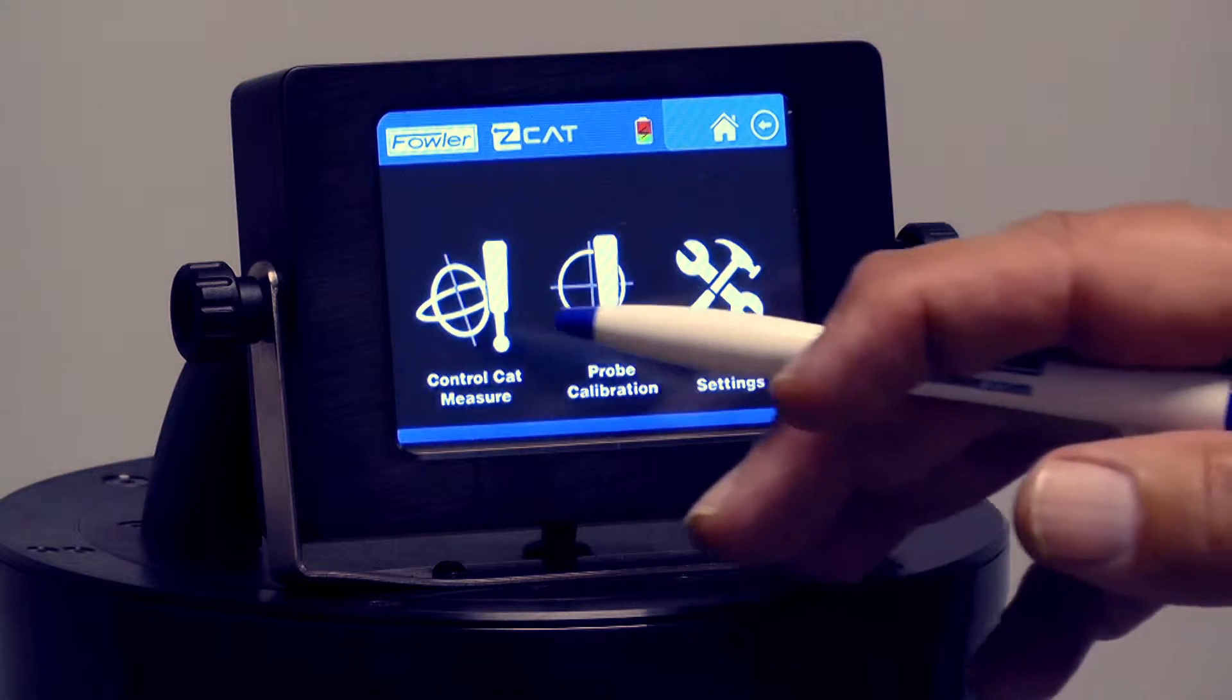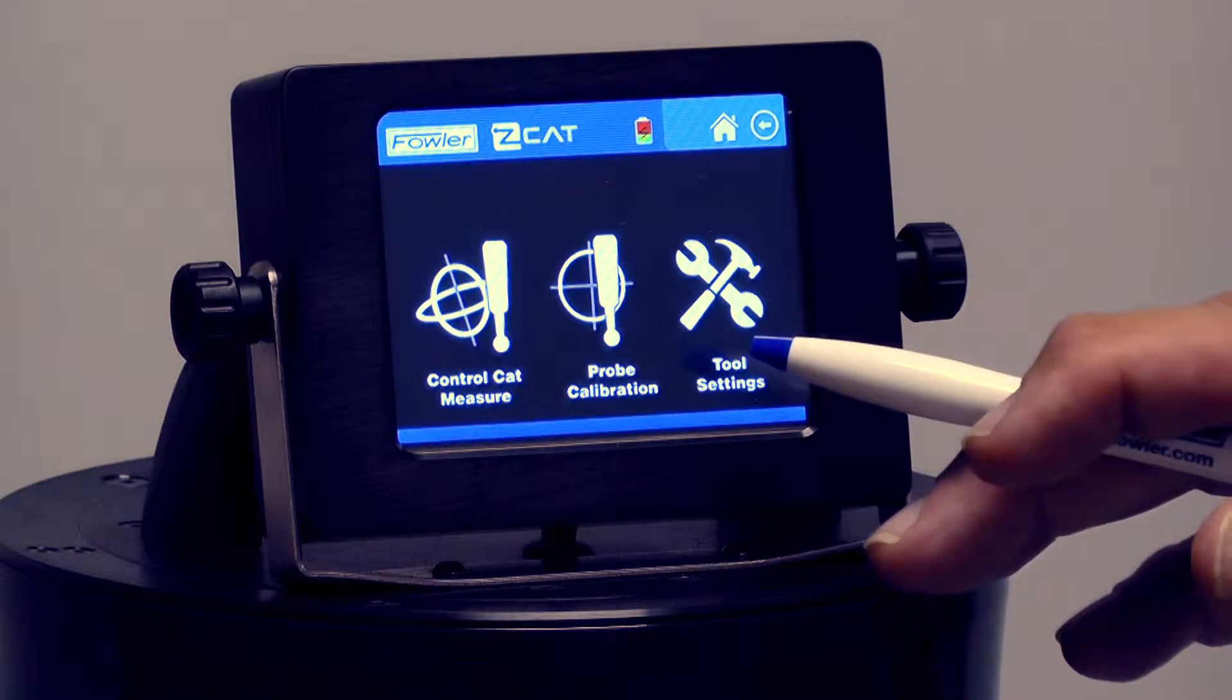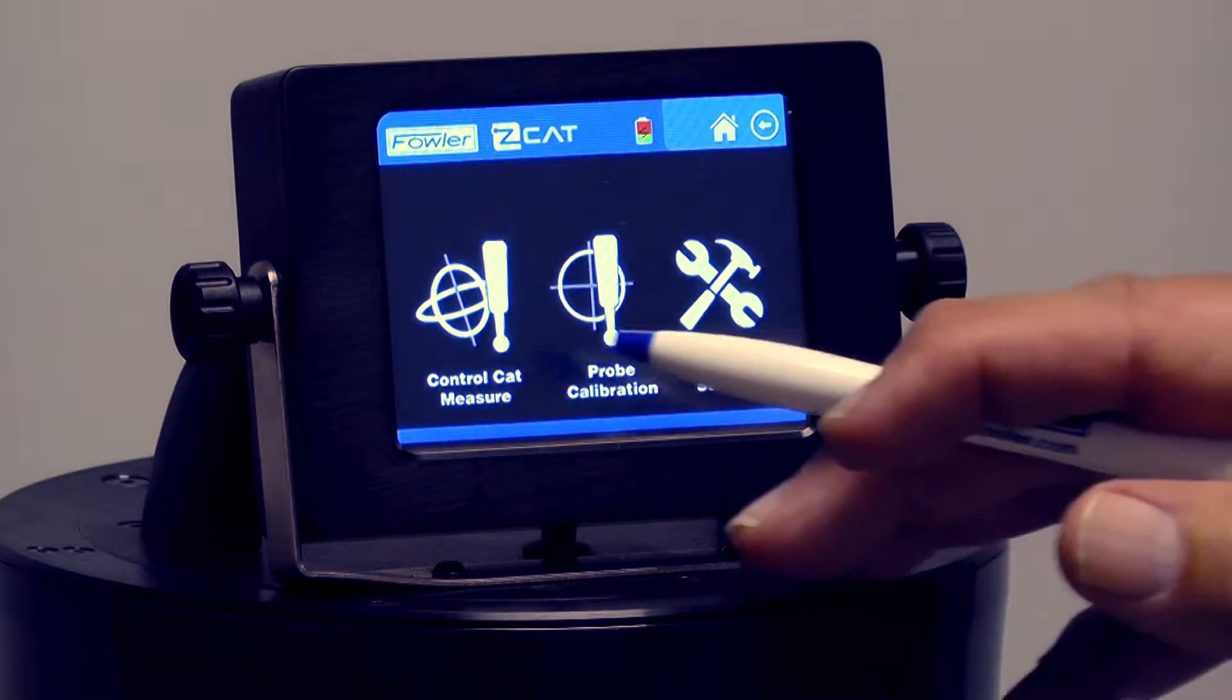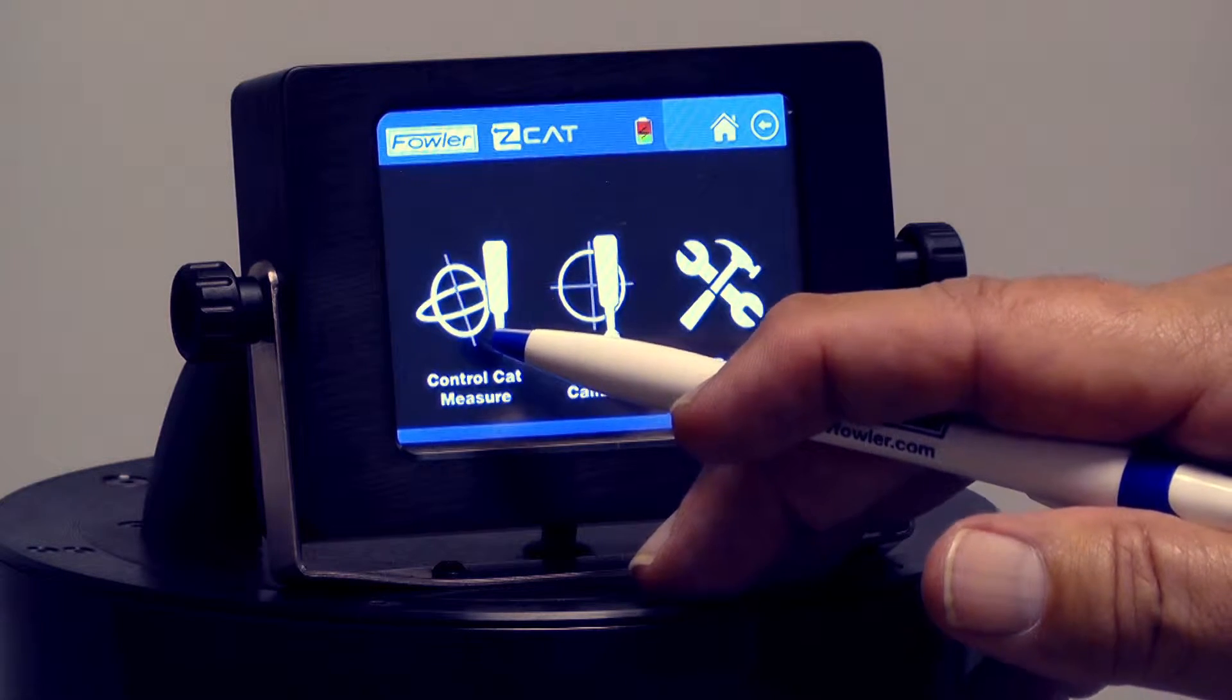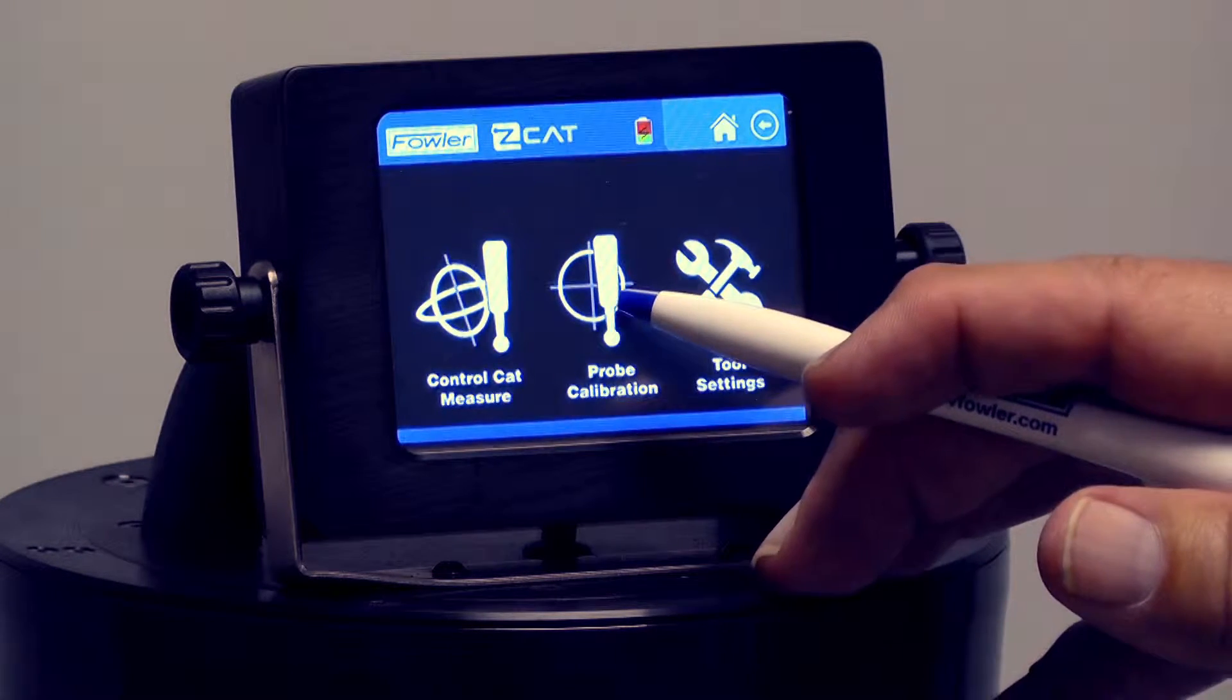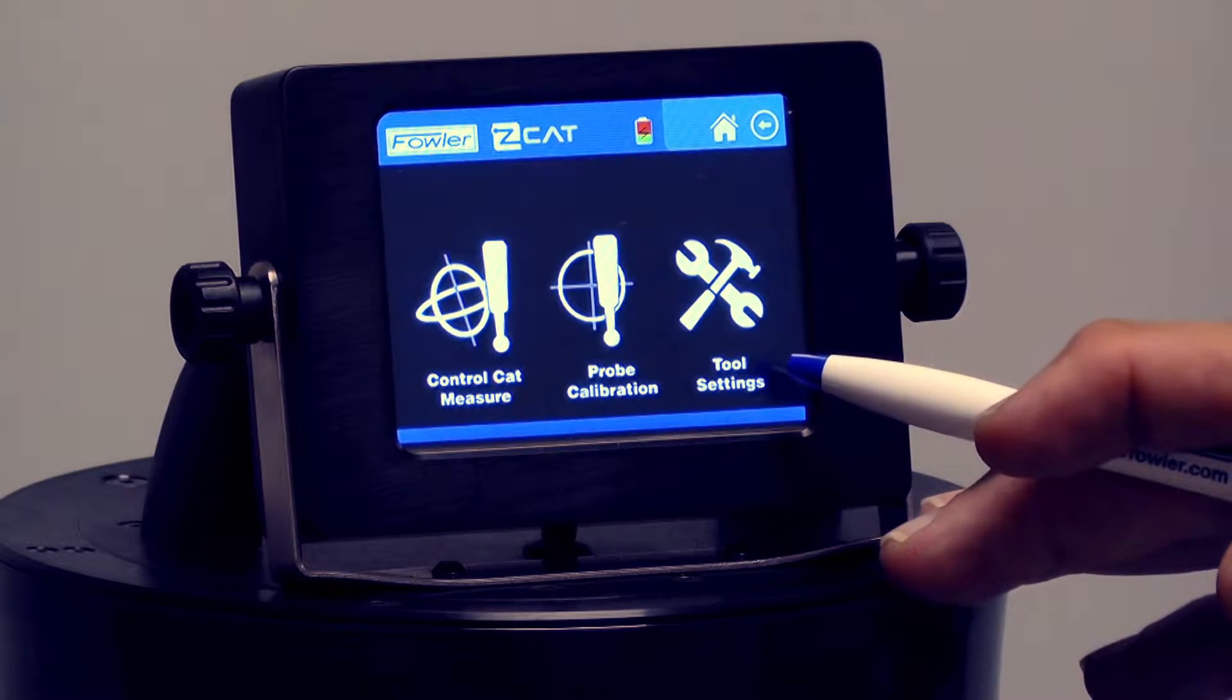Once it's gone through initial setup, this is the screen we'll get on ZCAT. We have three options on this screen: control cap measure, which is the built-in software; probe calibration; and tool settings.